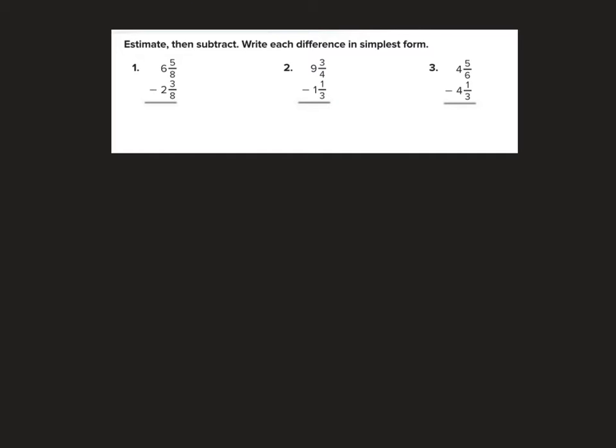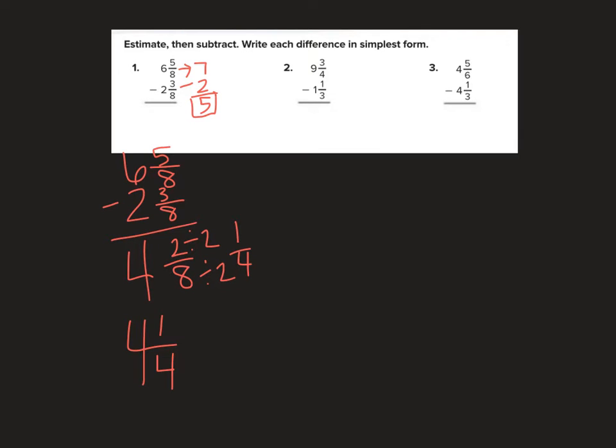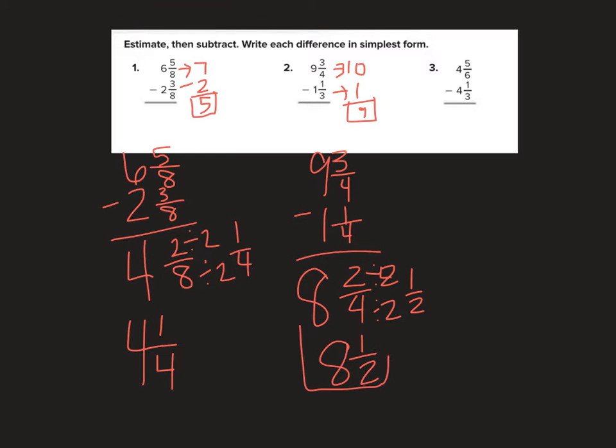Estimate, then subtract. I would say that's about 7. That's about 2. So my answer should be about 5. 6 and 5 eighths minus 2 and 3 eighths. 5 minus 3 is 2 eighths. 6 minus 2 is 4. Reduce. 4 and 1 fourths. Close to 5? Yep. That's about 10. That's about 1. So my answer should be about 9. 9 and 3 fourths minus 1 and 1 fourth. 3 minus 1 is 2 fourths, which hopefully you're saying reduce it, reduce it. 9 minus 1 is 8. Reduce. 8 and 1 half is your answer, which is close to 9.